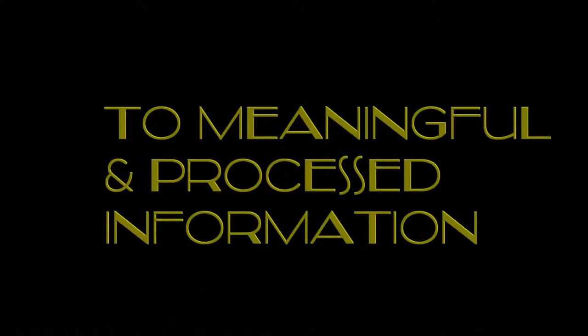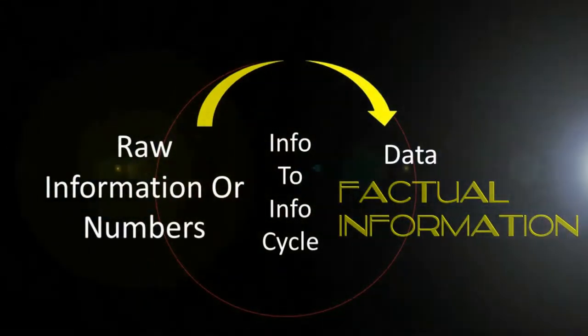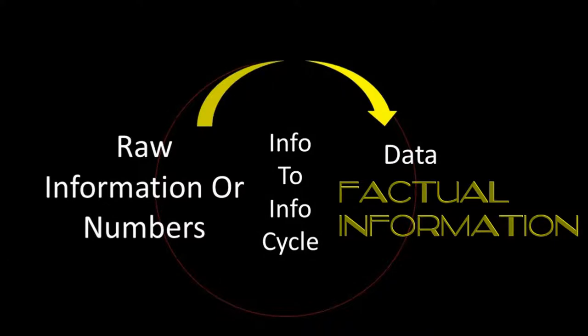Moving from raw information to processed or meaningful information requires two basic steps. The first step is to take the raw information — which may be subjective statements or numbers that have no meaning — and convert that into data. Data means factual information; it has to be expressed in a well-defined format. If we begin with numbers as the raw information, then the data has to be processed numbers associated with definitions as well as units.